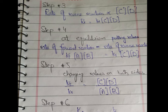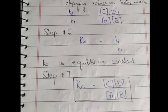kf over kr is equal to the molar concentration of C times molar concentration of D, divided by molar concentration of A times molar concentration of B. Step number six: we show that the equilibrium constant for the forward reaction over the equilibrium constant of the reverse reaction gives us the overall equilibrium constant, which we call Kc.